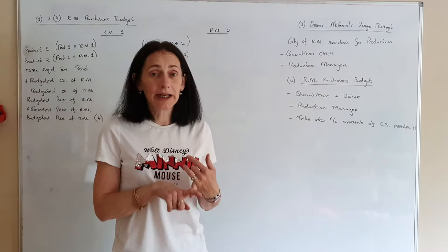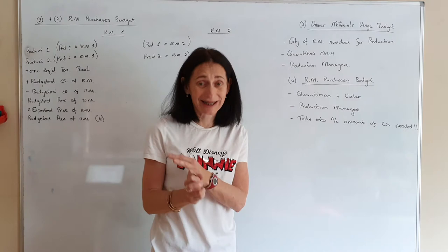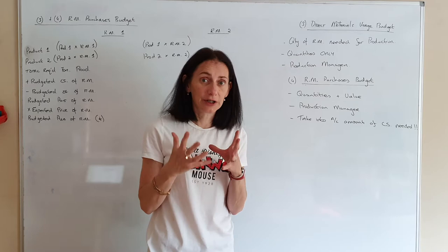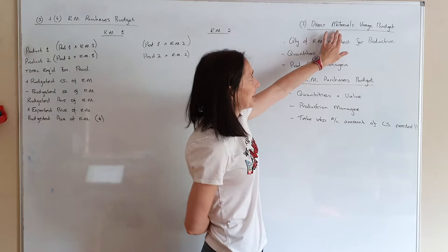We're still on our production budget — section C, worth 20%, and you have 30 minutes to do it. We've done the sales budget and the production budget. The first two — sales into production budget — are based on your products. Once you know how many products you're going to make, you'll need your raw materials. The next few budgets are about raw materials, so I'm going to do number three and number four as one budget to save you time.